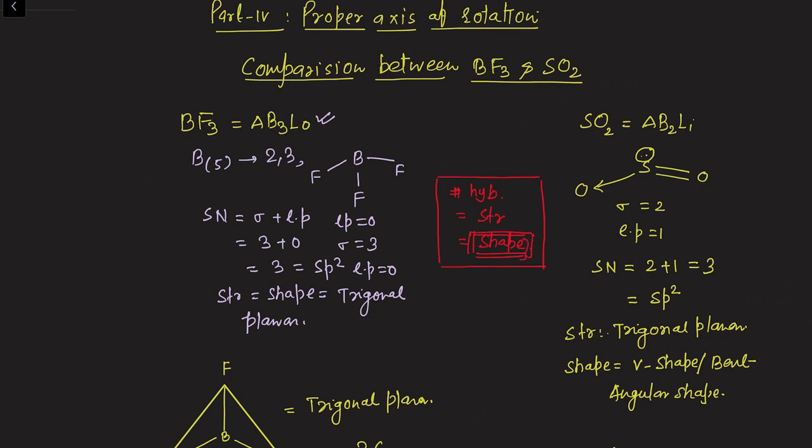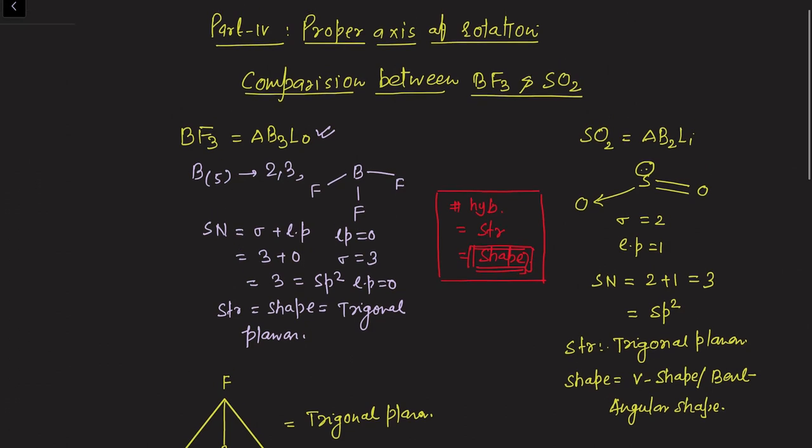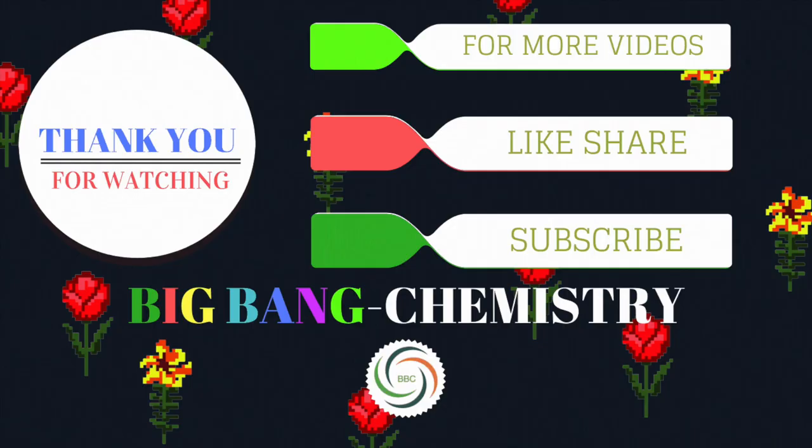I hope everyone understands the meaning of shape versus structure and how the presence of one lone pair of electrons changes the full symmetry of the molecule. Thank you very much — please like, share, and subscribe to my channel.